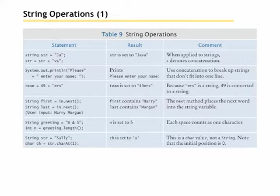Here are some examples of different string operations that you can use. If we set up a, ooh, there's a typo. In the first row under statement where it says string str equals ja, that string should have an uppercase S. It should not have a lowercase s. So string str equals ja, and then str equals str plus va. The resulting in str will be java. And then we have system.out.println please plus enter your name. That concatenates please together with enter your name.